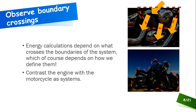If we define the system as the entire bike, the energy balance is different. Friction generates heat energy coming into the system, and exhaust with heat and chemical energy leaves through the tailpipe. Depending on how you define your system, the energy balance changes, but in both cases the laws of thermodynamics apply.